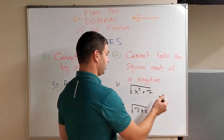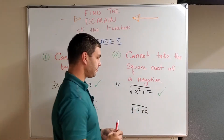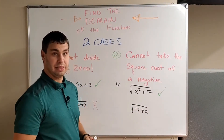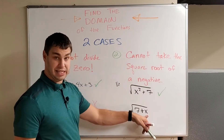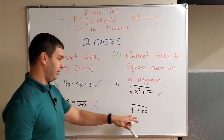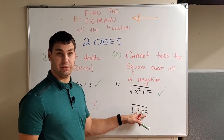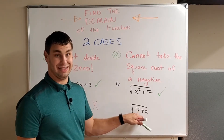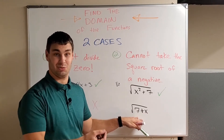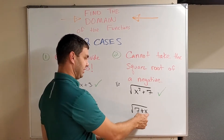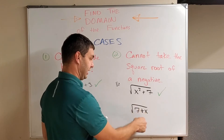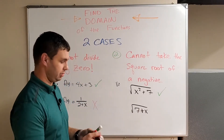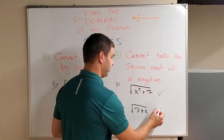Every single x will work when I plug it in. In the bottom one, though — the square root of (7 + x) — I can plug in negative seven. I can have the square root of zero; that'd be zero, that's fine. However, I cannot have the square root of something negative — your calculator says error, it doesn't work. For example, if I said x was negative eight, then I'd have the square root of negative one, which we just cannot take the square root of. So this does not work for all of our x's.